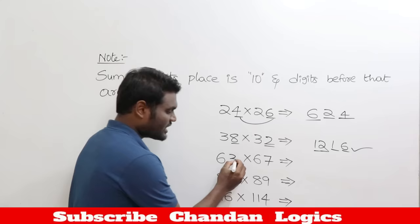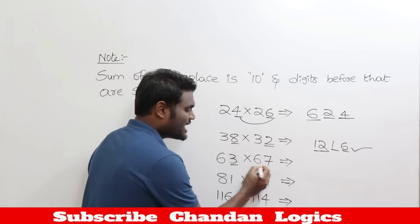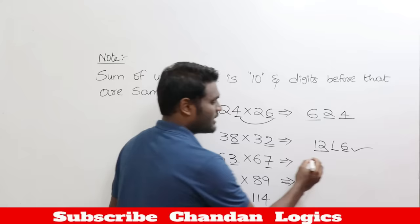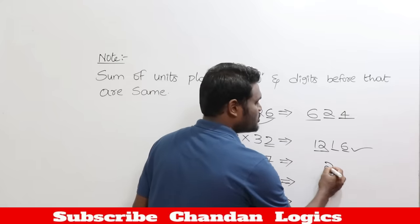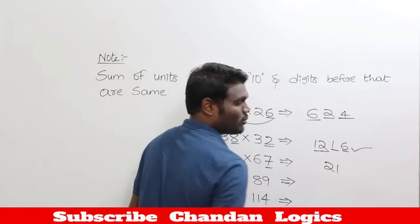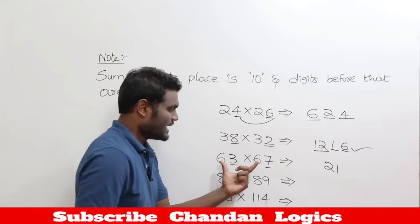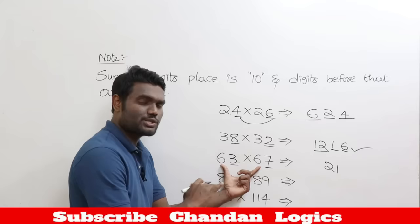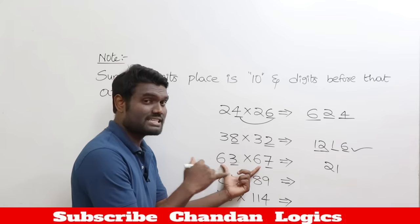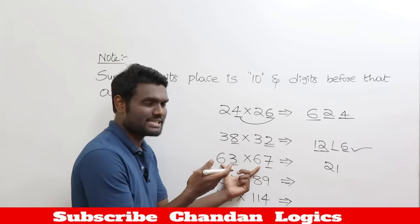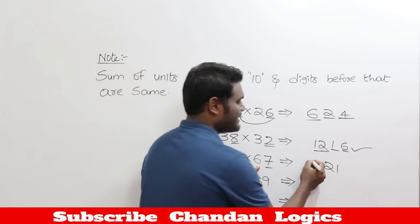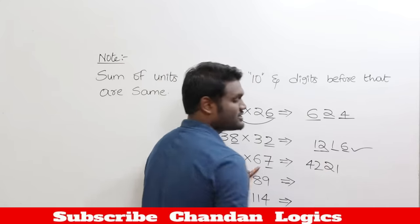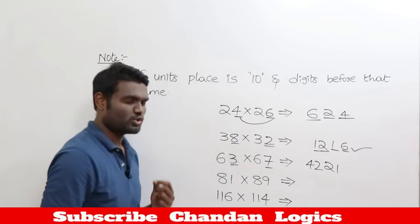Here the last 2 digits are 3 and 7. 3×7 = 21, so the last 2 digits will be 21. The leading digit is 6 — multiply 6 by its next number: 6's next number is 7. 6×7 = 42. So the answer is 4221.